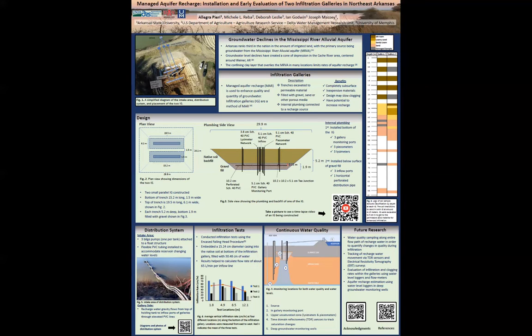Recharged water movement in the vadose zone will be tracked through soil moisture sensors and electrical resistivity tomography surveys, also known as ERT surveys.